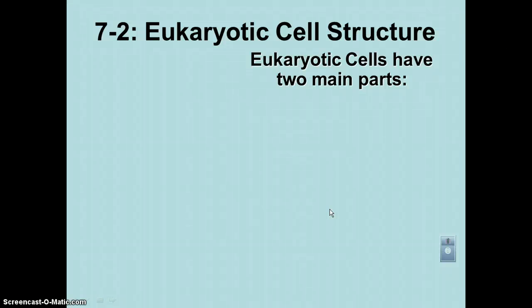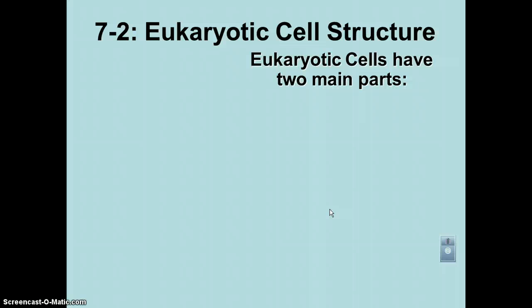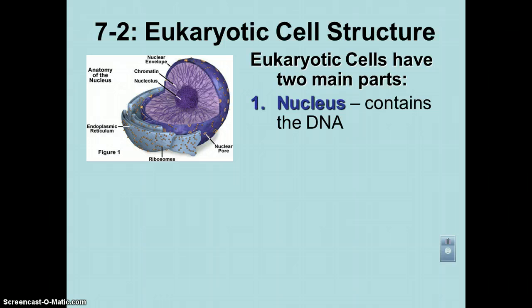For this podcast, we're going to start to look at the structures found inside a eukaryotic cell. Remember that most of these structures are going to be called an organelle. First of all, we're going to talk about what are the two main parts of a eukaryotic cell. Well, the first one is obviously the nucleus, because that's the number one feature of a eukaryotic cell. Your nucleus is your control center of the cell — it's the place where all the DNA is going to be found.